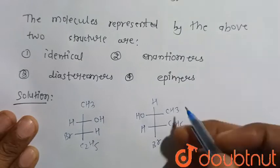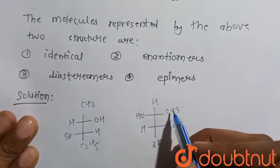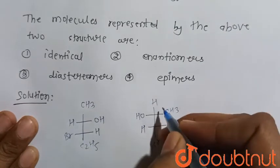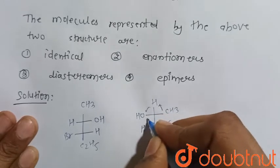We know that groups containing carbons should be present at the top position, present in the vertical line. So this will go here and this will come here and this OH will come here.